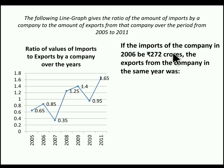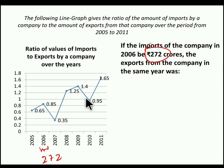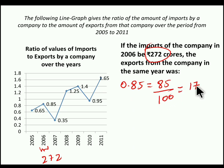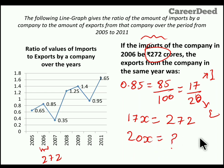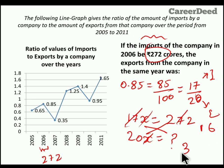Moving to the third question: if the import of the company in the year 2006 is 272 crores, what was the export in the same year? In 2006, the ratio of import to export is 0.85, which can be written as 85/100, reducing to 17/20. So 17 represents import and 20 represents export. Since import is 272 crores, 17 parts equals 272 crores, meaning 1 part is 16 crores. Export is 20 parts, so 20 × 16 = 320 crores. The export for the year 2006 is 320 crores.